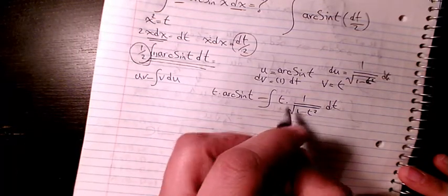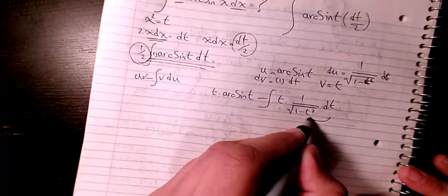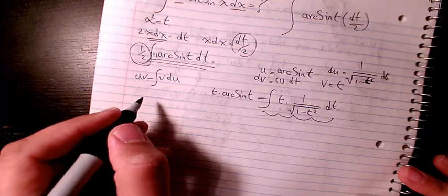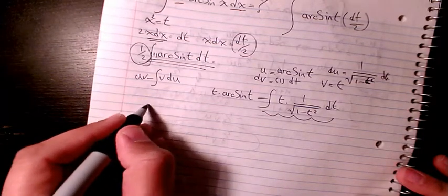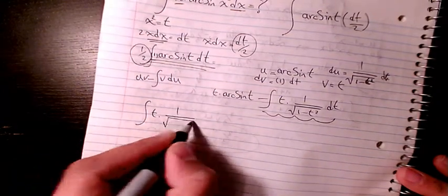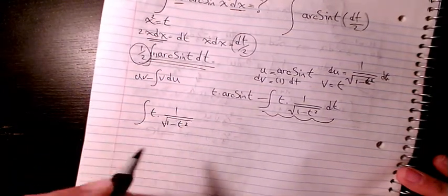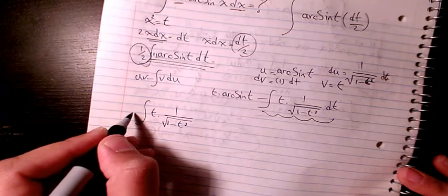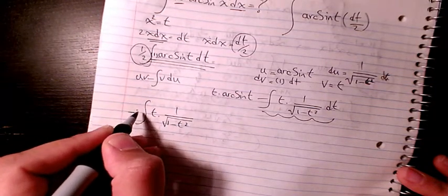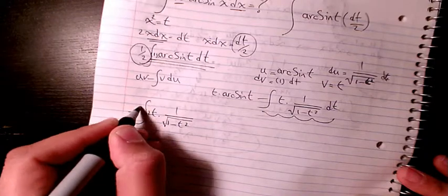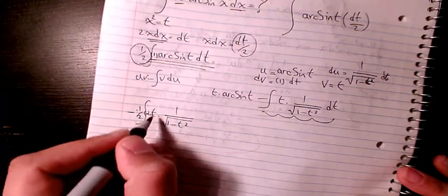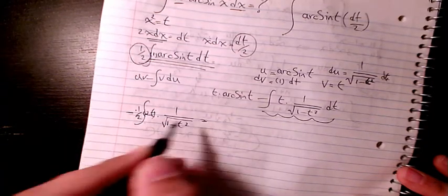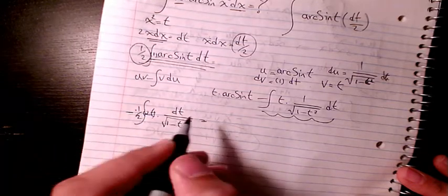Then I need to find out the integration of this part. It will be the integral of t over square root of 1 minus t². I will have it as negative 2 and 1 over 2, with negative t here. So I multiplied by negative 2 and multiplied by 2 and 1 over 2.